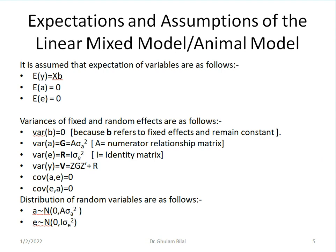So we have certain expectations and assumptions of linear mixed model. Expected value of Y equals XB. Average value of A is 0. Average value of E is 0 because they are random effects and their average values are assumed to be 0. Variances for fixed and random effects are assumed.